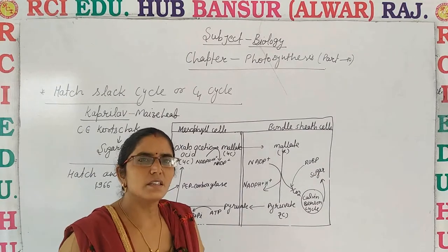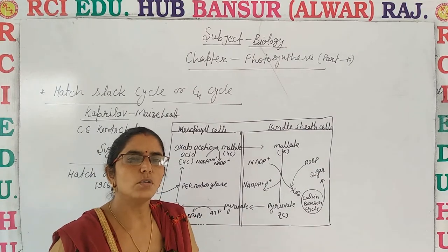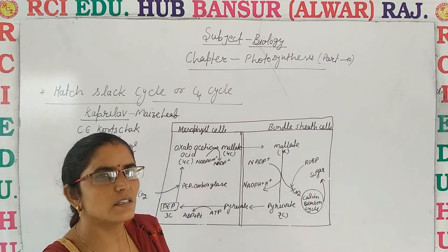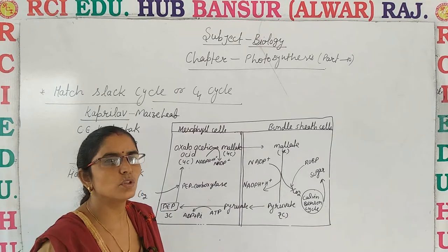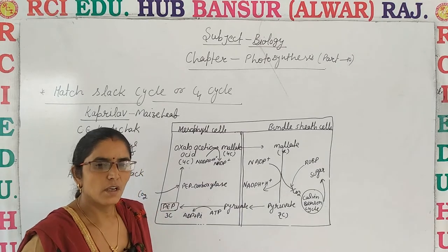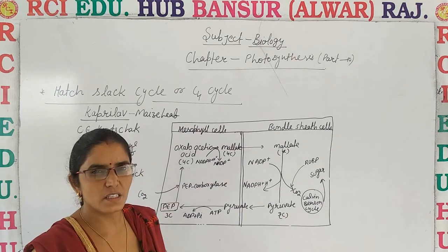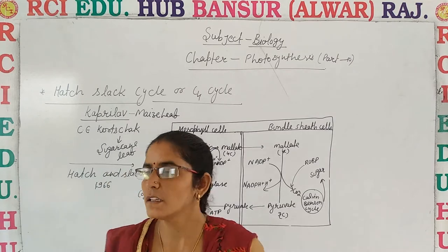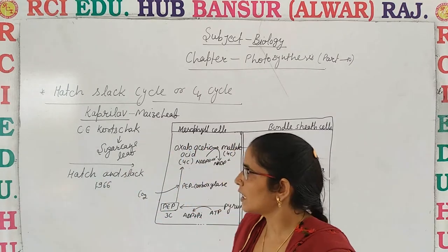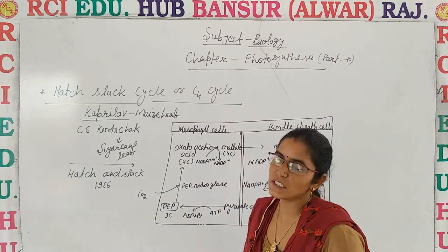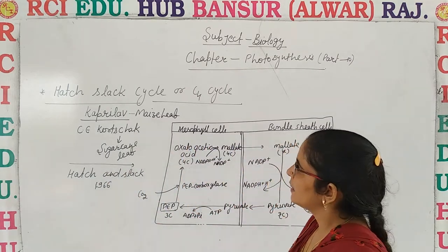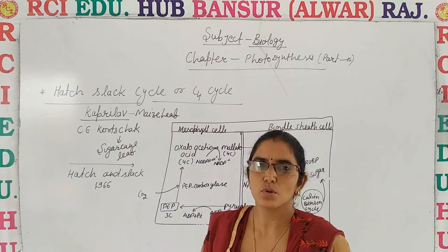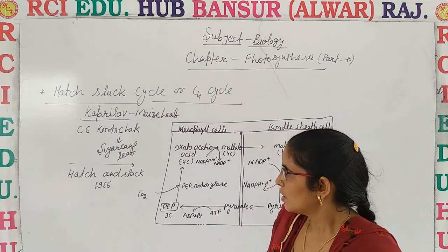We discussed how dark reaction takes place. In the dark reaction, it takes place through three pathways. First, the C3 cycle or Calvin-Benson cycle. Another is the C4 cycle, also known as the Hatch-Slack cycle. And the next one is known as CAM, Crassulacean Acid Metabolism.